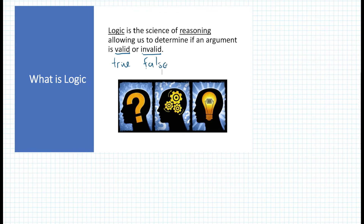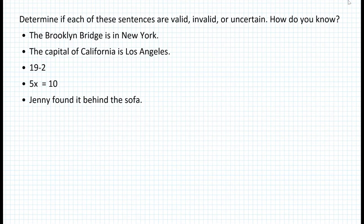Unfortunately, in the real world, arguments are not just true or false. Something could be both true and false at the same time, or we cannot determine if an argument is true or false. That's why we assign specific statements to these types of sentences. So let's determine if each of these sentences are valid, invalid, or uncertain.